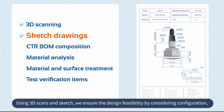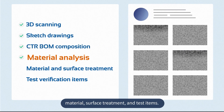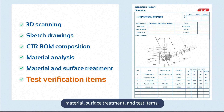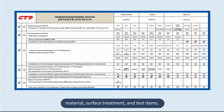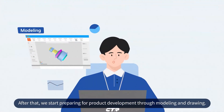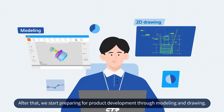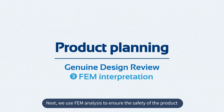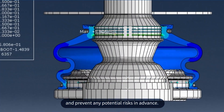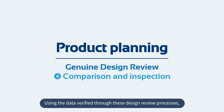We ensure the design feasibility by considering configuration, material, surface treatment, and test items. After that, we start preparing for product development through modeling and drawing. Next, we use FEM analysis to ensure the safety of the product and prevent any potential risks in advance.